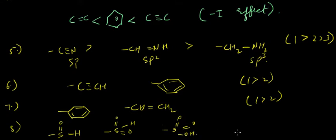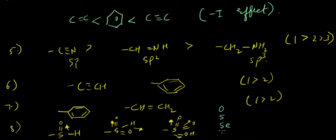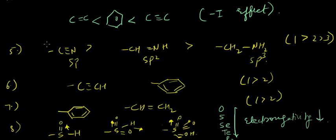Now, how do you compare minus-I effect when the number of oxygen atoms in a sulfur group changes? As the number of oxygen atoms increases, the minus-I effect also increases, because more electronegative oxygen atoms are pulling electrons. Also remember from the periodic table that electronegativity decreases going down a group: oxygen, sulfur, selenium, tellurium, polonium — so the minus-I effect decreases in that order going down the group.